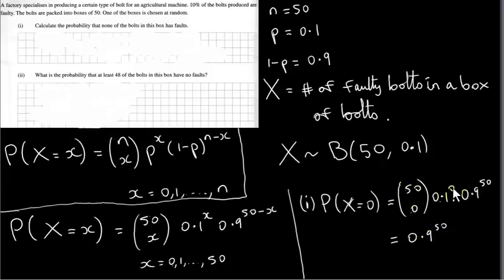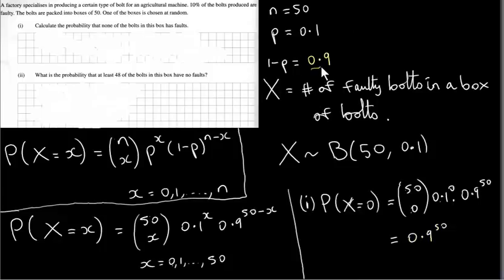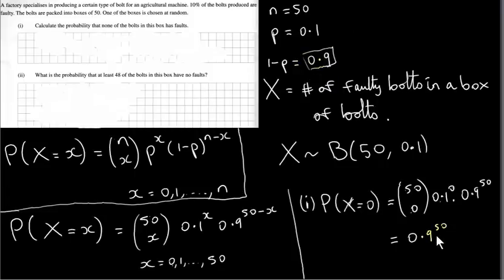50C0 is 1, and 0.1 to the power of 0 is 1 — in fact, any number to the power of 0 is 1. So we just get 0.9 to the power of 50, which makes sense. The probability that a bolt is not faulty is 0.9, and since we're dealing with 50 independent bolts, the probability that all 50 are not faulty is 0.9 to the power of 50. It's like asking the probability of getting heads in 50 tosses of a coin — we'd put 0.5 to the power of 50, because we're dealing with independent events.